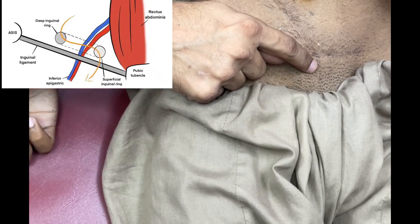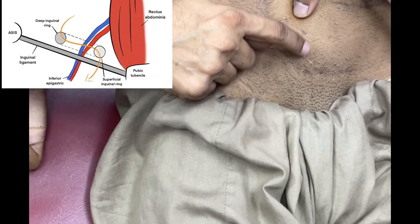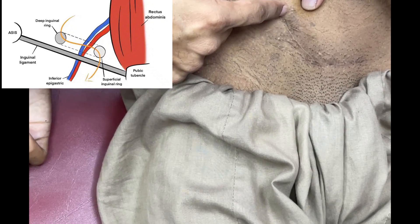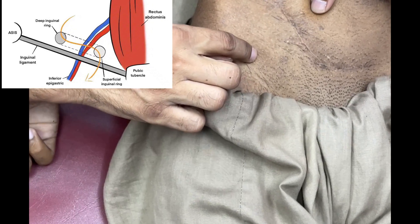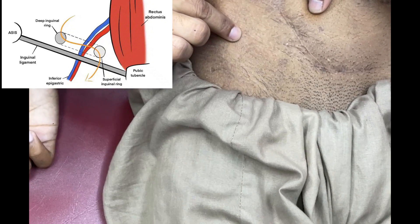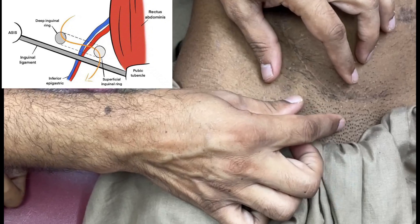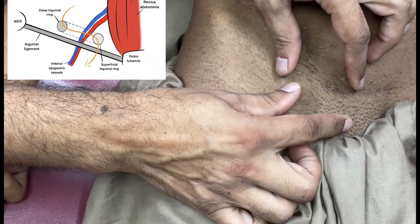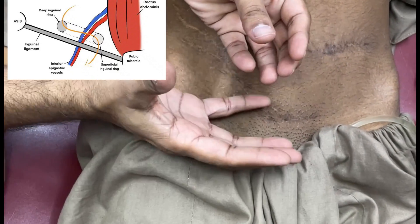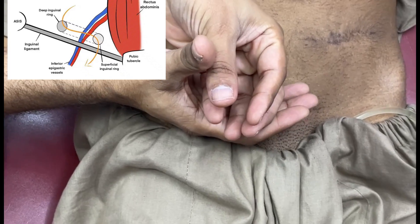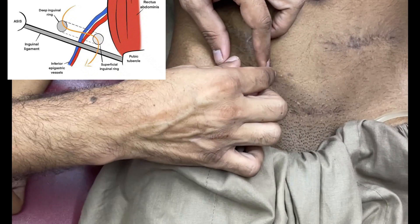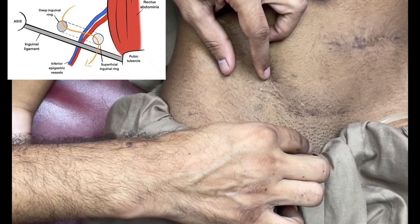The medial border of Hesselbach's triangle is formed by the lateral border of the rectus abdominis muscle, the lateral border is formed by the inferior epigastric vessels, and the base is formed by the inguinal ligament. As the hernia protrudes directly through Hesselbach's triangle, it is called a direct inguinal hernia and usually has a globular shape, whereas an indirect inguinal hernia has an oblongated shape.